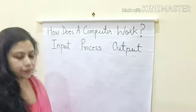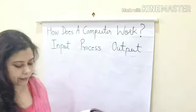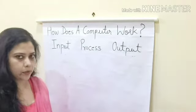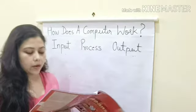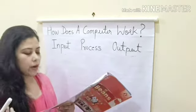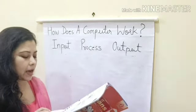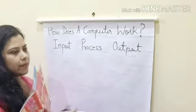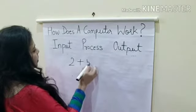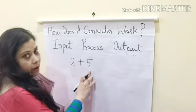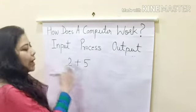Let's take one last example of how a computer works. Let us understand the working of a computer with an example. The data and instructions together are called input. For example, if you want to do a simple calculation on a computer — say you want to add 2 plus 5 — then 2 and 5 are the data and plus is the instruction you are giving to the computer.